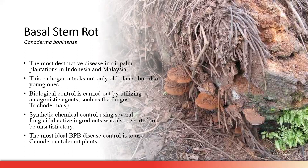This is how the fruiting body looks. You can see in the picture there are some fruiting bodies appearing from the stem. This is the most destructive disease in oil palm plantations in Indonesia and Malaysia. It attacks not only old plants but also young plants. Biological control is carried out by utilizing antagonistic agents like Trichoderma.